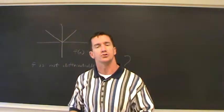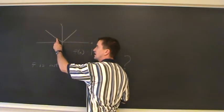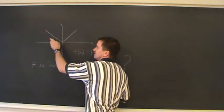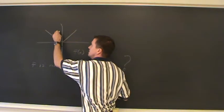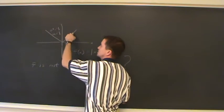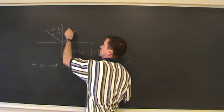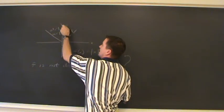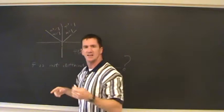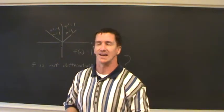Differentiability and derivatives deal with slope. What's the slope of this line as you approach x equal to zero from the left? The slope is negative one — f prime is negative one. What's the slope of this line as you approach zero from the right side? The slope is one, or f prime equals one. These slopes are not the same, therefore this function is not differentiable at x equal to zero.